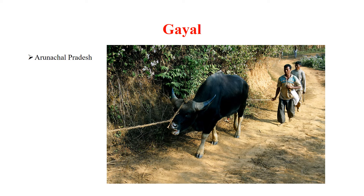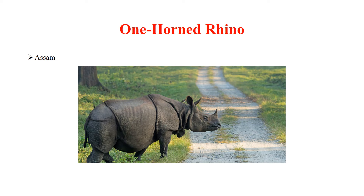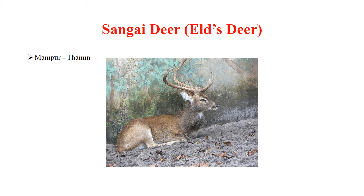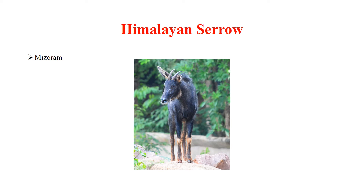One-Horned Rhino is the state animal of Assam. Red Panda is the state animal of Sikkim. Sangai Deer or Brow-Antlered Deer is the state animal of Manipur. Himalayan Serow is the state animal of Mizoram.